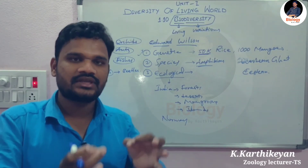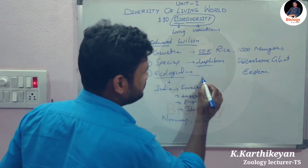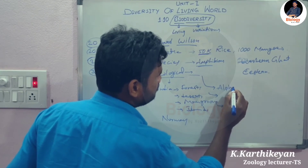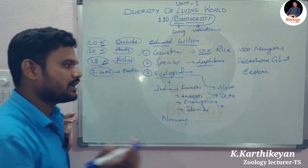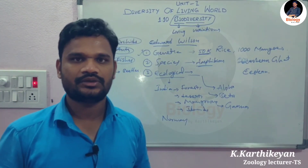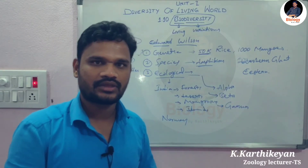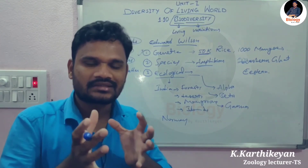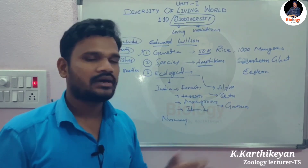Ecological biodiversity is divided into three types: alpha, beta, and gamma ecological biodiversity. Alpha ecological biodiversity refers to the number of species present in a particular area or ecosystem — how many species exist within one specific ecosystem.